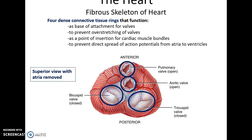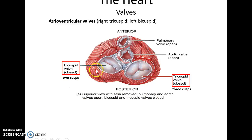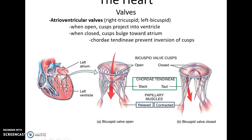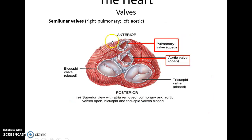The atrioventricular valves are the bicuspid valve and the tricuspid valve. The tricuspid valve has three cusps and the bicuspid valve has two cusps or leaflets. Their structure — where the cusps are attached via the chordae tendineae to the papillary muscles — is critical for function. When relaxed, they allow blood to pass from the atria into the ventricles. When the ventricles contract, the papillary muscles pull on the chordae tendineae, preventing the cusps from inverting, so blood cannot back up into the atria.